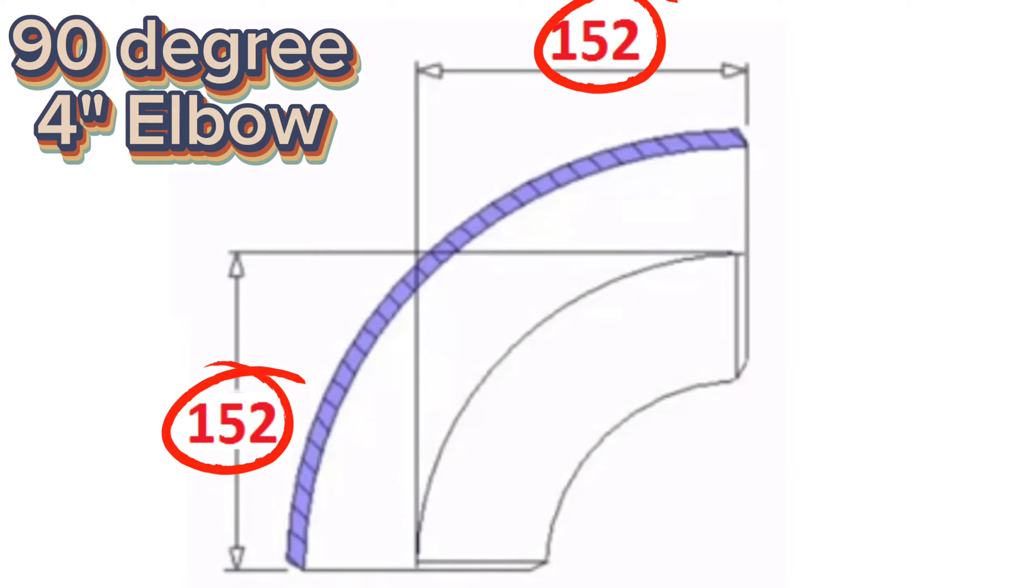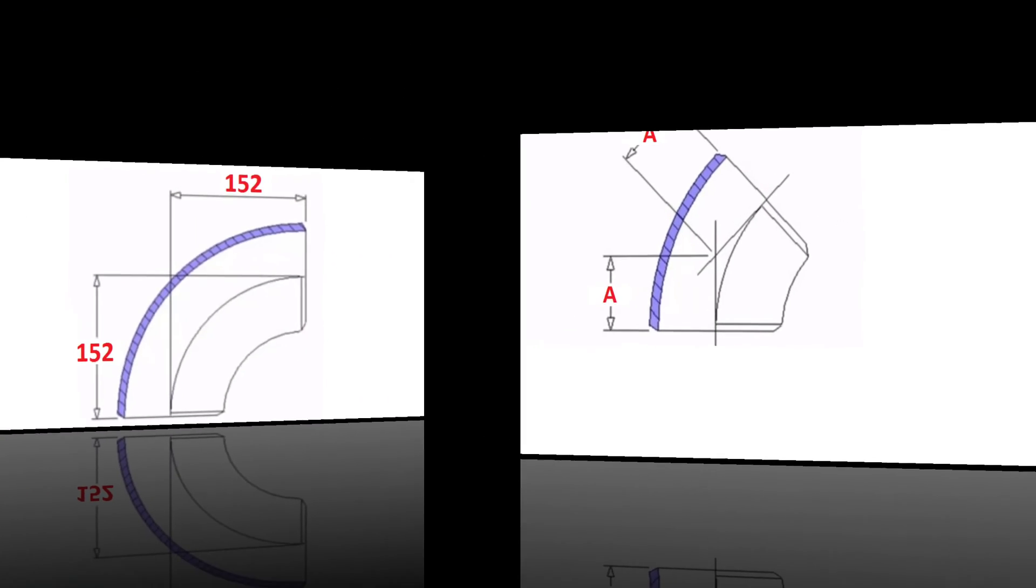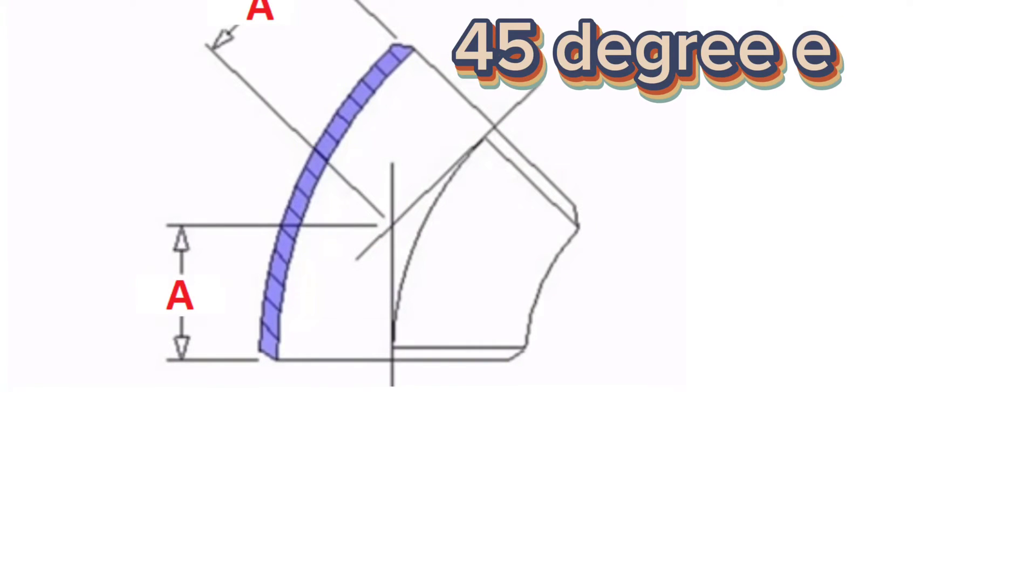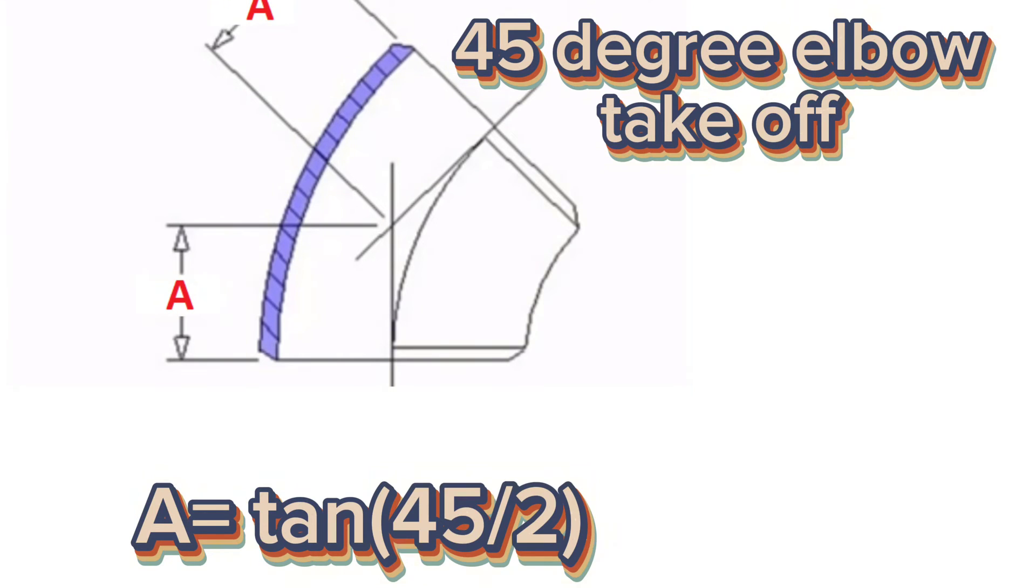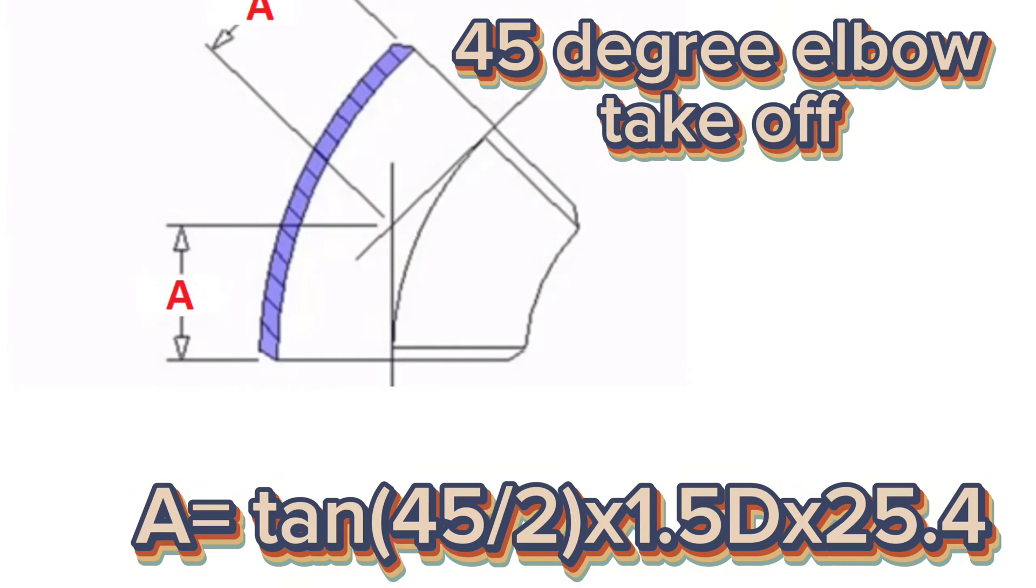Now let's see the formula for 45 degrees long radius takeoff. Formula: A equals tangent, 45 halves, times 1.5 d times 25.4. On this formula A is elbow center to end dimension takeoff, d is size of elbow in inch.